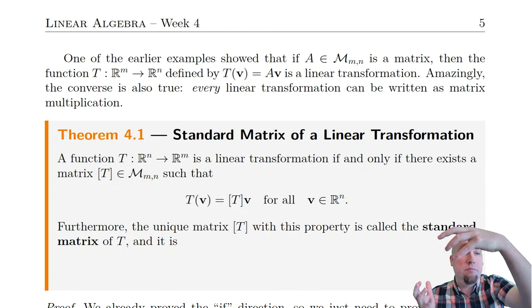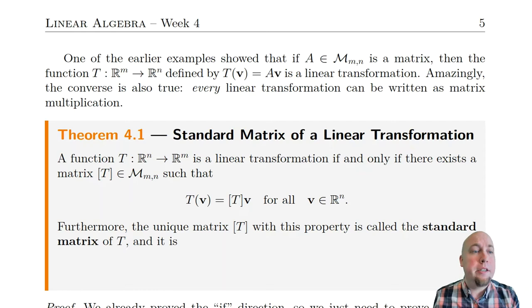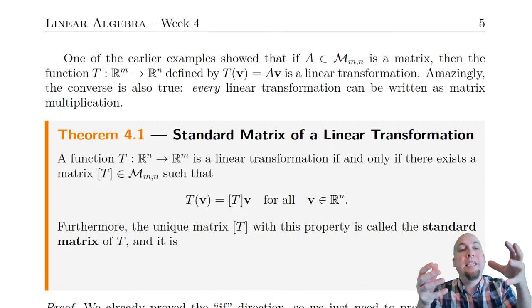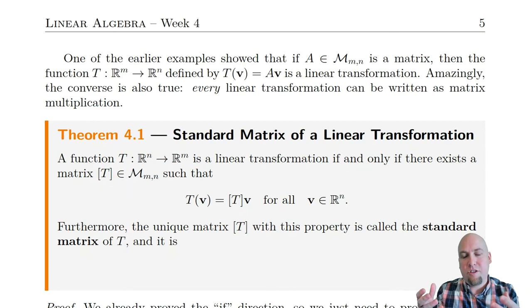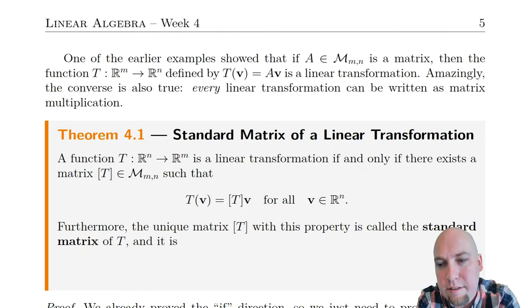Now what we're going to show is that every linear transformation has this form. No matter what linear transformation I give you, you can always find some matrix that does the same thing — some matrix such that that linear transformation just equals matrix times vector. So let's see how this works and be a little bit more precise. Let's show the big beast of a theorem for today's class.